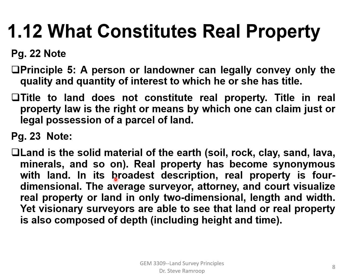In its broadest description, real property is four-dimensional: you have your x, y, and z values — eastings, northings, and height above mean sea level — but also a fourth dimension: changes in time. The average surveyor, attorney, and court visualize real property in two-dimensional length and width, yet visionary surveyors see that land is also composed of depth and changes in time.